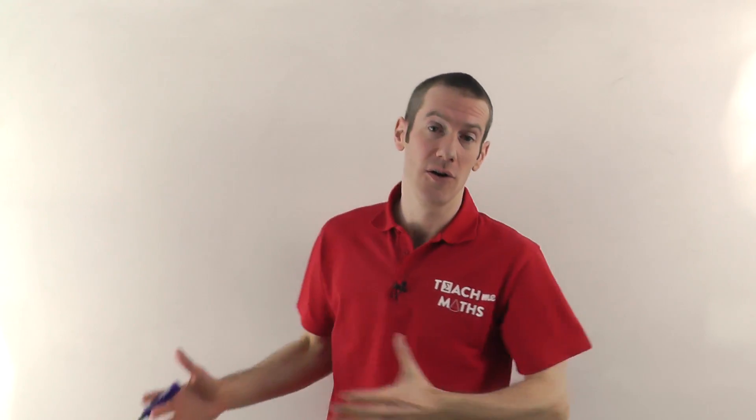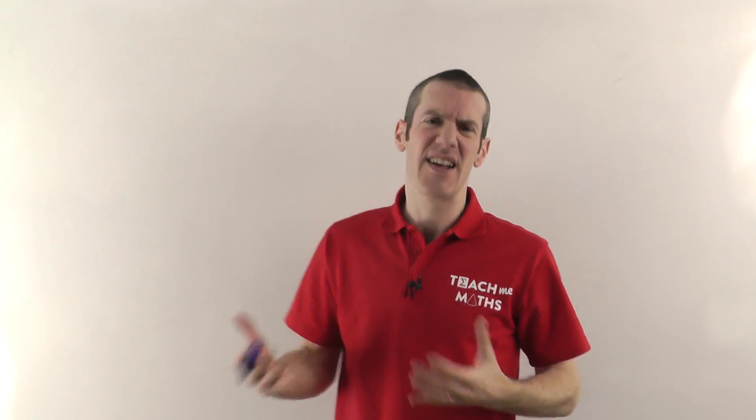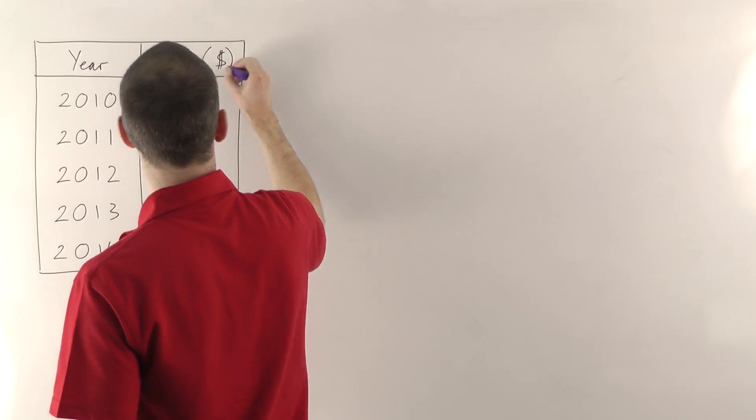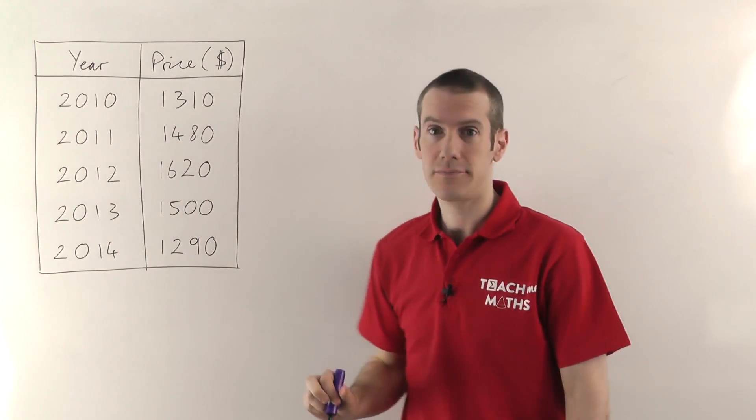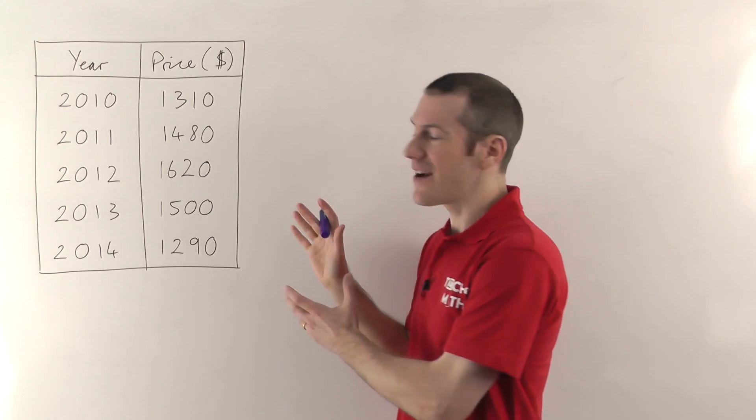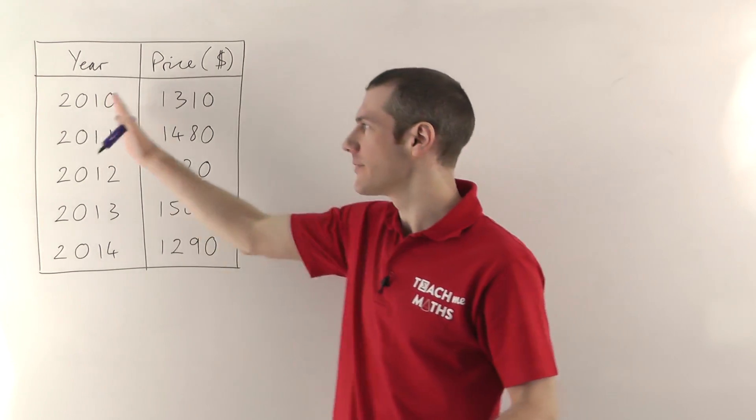I'm just going to show you the method on the board here, and for that we're going to need a frequency table. So give me a second, I'll draw up a quick frequency table and I'll explain how you construct the line graph. Alright, there we go. Now what I've chosen here is the average price of gold over a few different years.